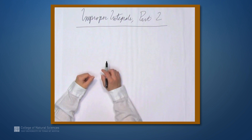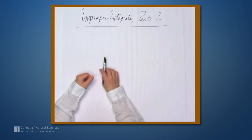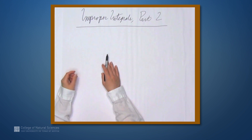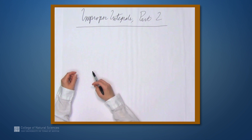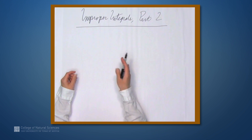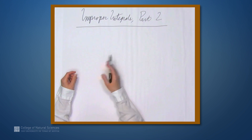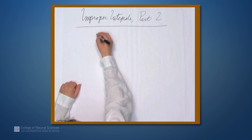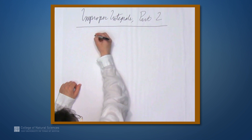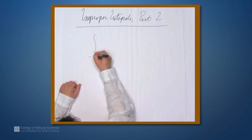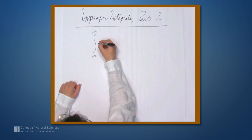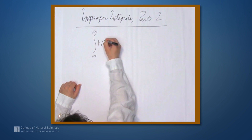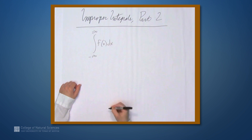We're here at the example table, and in this video we're going to be talking again about improper integrals. We've already talked about integrating from 0 to infinity, or from 0 to 1 where the function is unbounded, like 1 over x. But in this video, we're going to look at integrals of the form negative infinity to infinity of f of x dx.